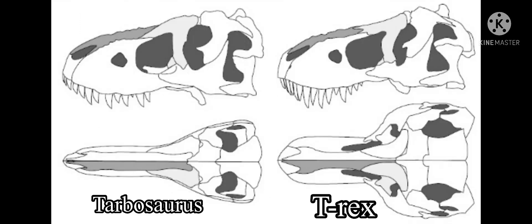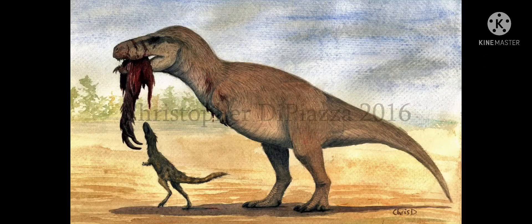Next are the skulls. Tarbosaurus has a longer, thinner snout compared to T-Rex, which has a shorter, robust snout. Now, we don't know what Tarbosaurus's skin was because we don't have fossil evidence yet. It was probably a lot different from T-Rex — probably much fluffier, with a different pattern, like maybe some more stripes and stuff.